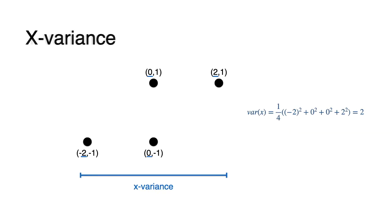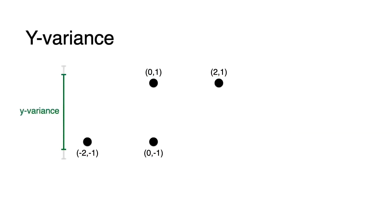To find the y-variance, it's exactly the same thing. We take the y-coordinate and take the average of the squares: one-quarter times (−1² + −1² + 1² + 1²), and that equals 1.